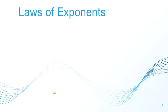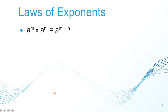Let's begin with the basic laws of exponents. The first one is: a to the power of m times a to the power of n is equal to a to the power of m plus n. So you add the indices, provided that the bases are the same and the operation is multiplication. In most books, we call this the product rule.